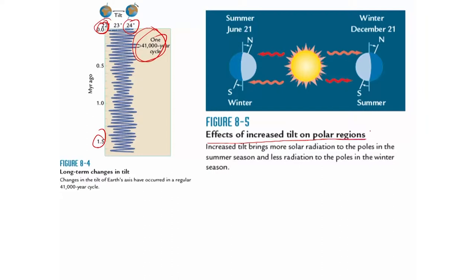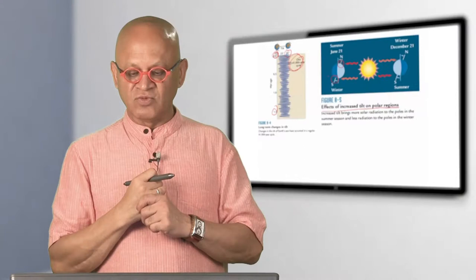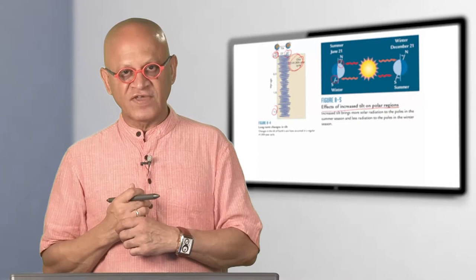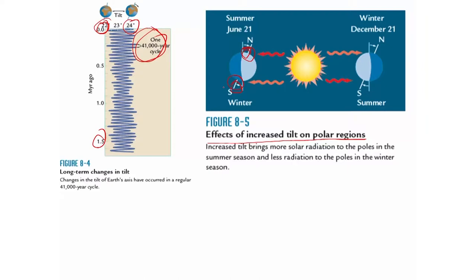If you increase the obliquity, the hemisphere facing the sun receives more energy during summer, and the hemisphere facing away receives even less in winter. Because the total distance from the sun is not changing, the annual total sunlight doesn't change much, but the seasons become more extreme—stronger summer and stronger winter in both hemispheres. The tilt thus changes seasonality and produces in-phase changes across hemispheres.